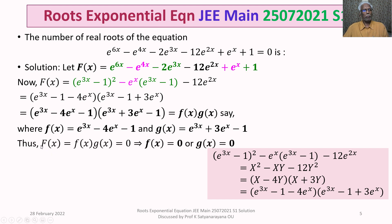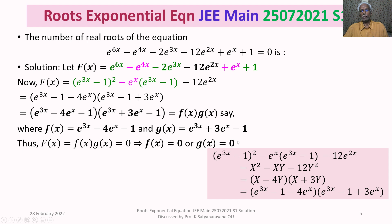Now F(x) = 0 implies f(x)·g(x) = 0, which implies f(x) = 0 or g(x) = 0. We now discuss the zeros of each factor in detail.